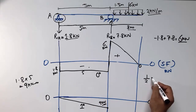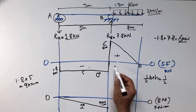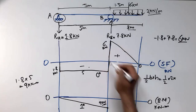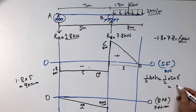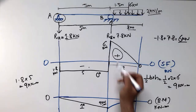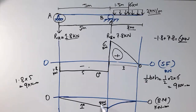For the cantilever portion, the shear force is triangular with base 3 m and height 6 kN. The area = ½ × 3 × 6 = 9 kN·m, acting upward (positive). Adding this positive 9 kN·m to the −9 kN·m at B gives zero at the free end. So the bending moment closes back to zero, as expected at a free end.